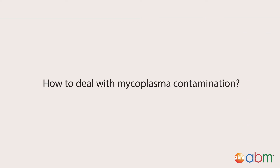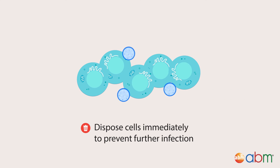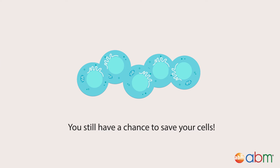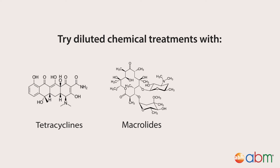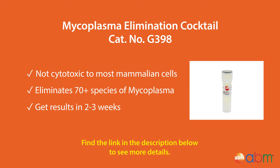So what do you do if you end up detecting mycoplasma in your sample? As always, it's best to discard contaminated cells as soon as possible to prevent other cells from being infected. But if your cells are too important to discard, there are a few ways to save them. Diluted chemical treatments like tetracycline, macrolides, or quinolones can be used to eliminate mycoplasma while maintaining the quality of your cell culture. ABM also offers a mycoplasma elimination cocktail that can effectively clear cells from mycoplasma contamination within a few weeks.